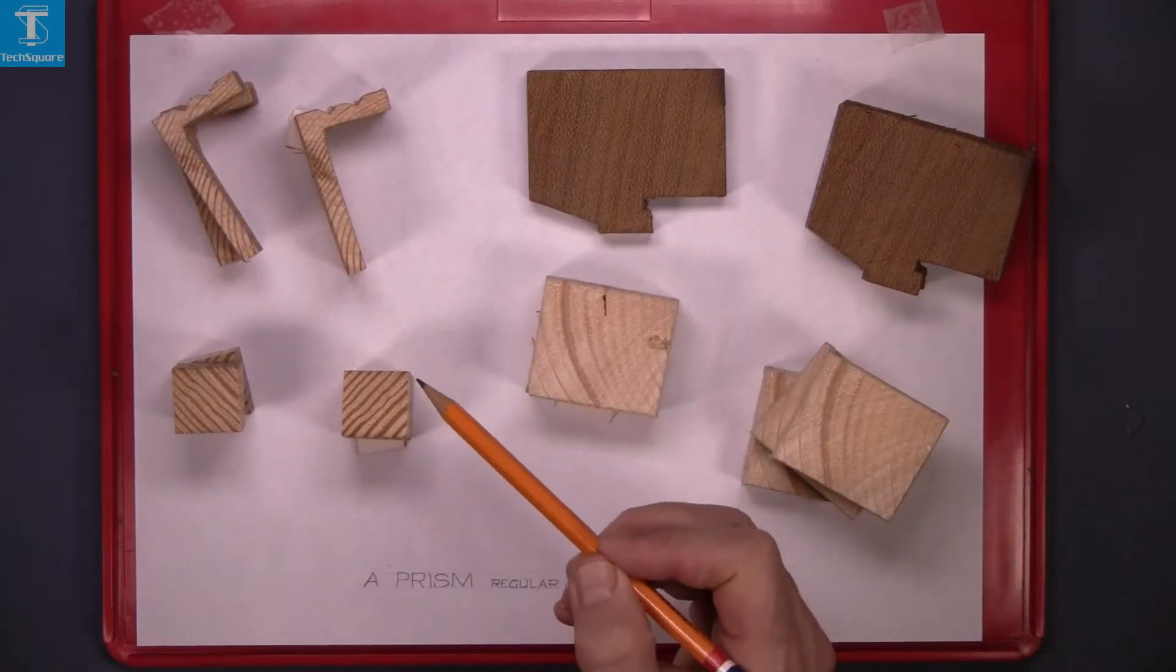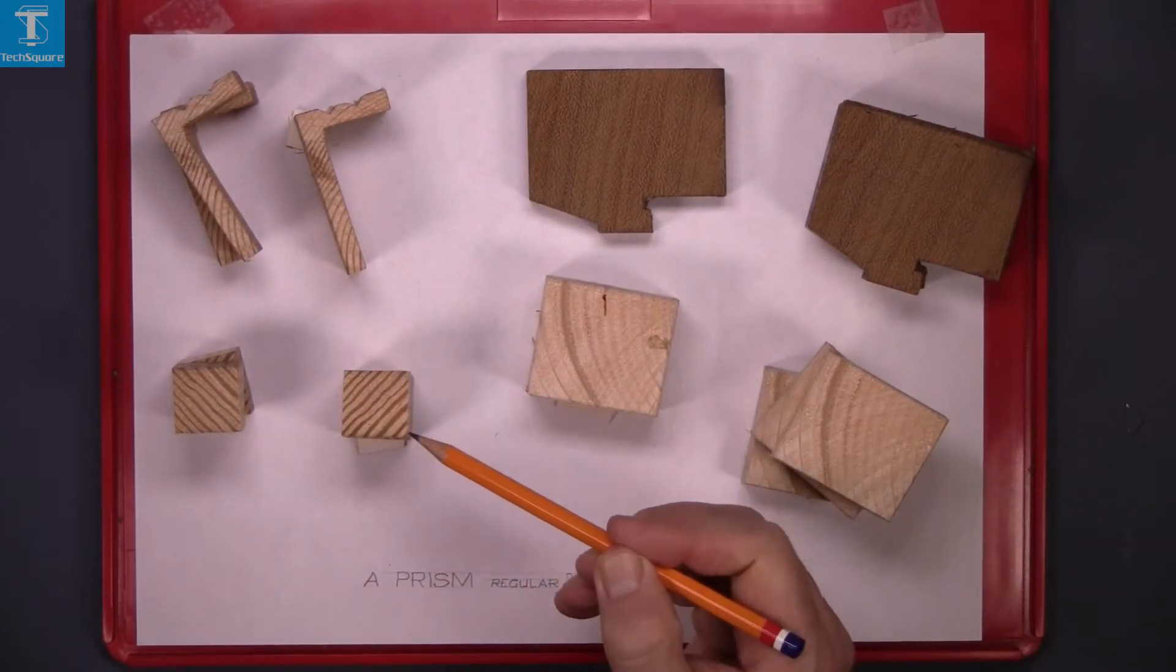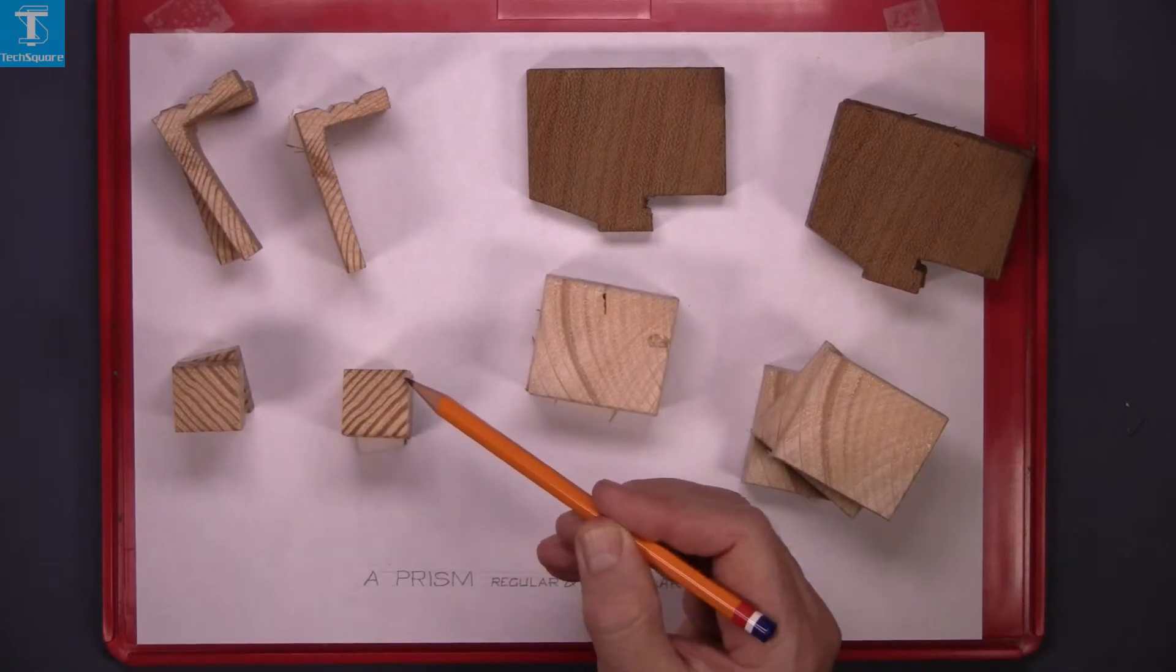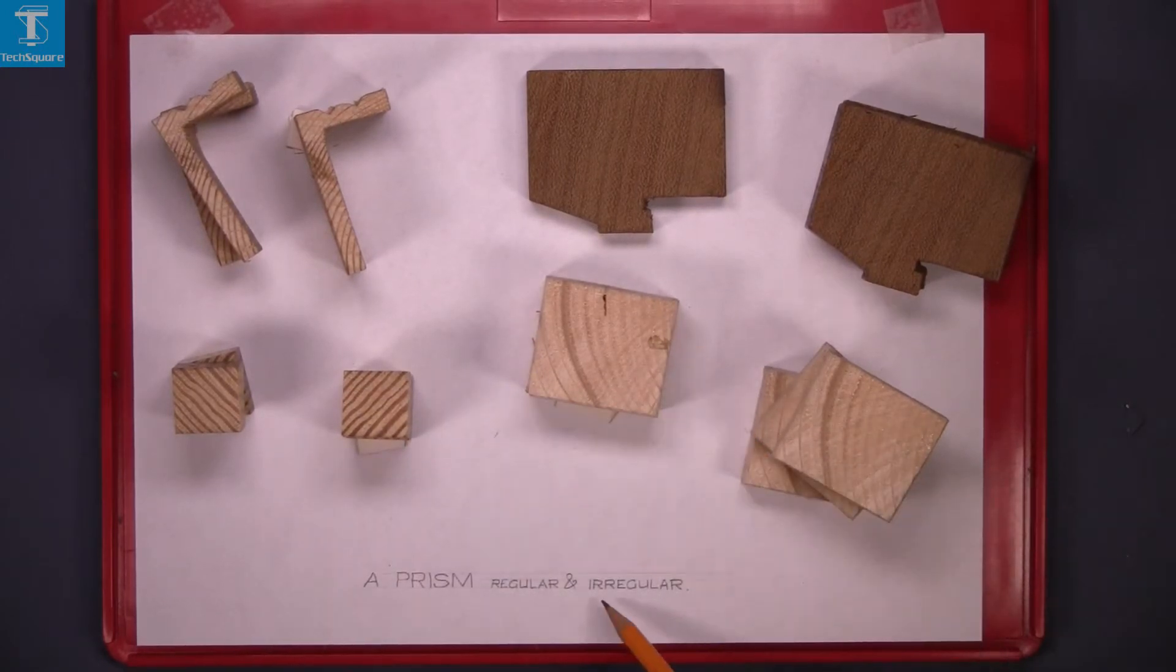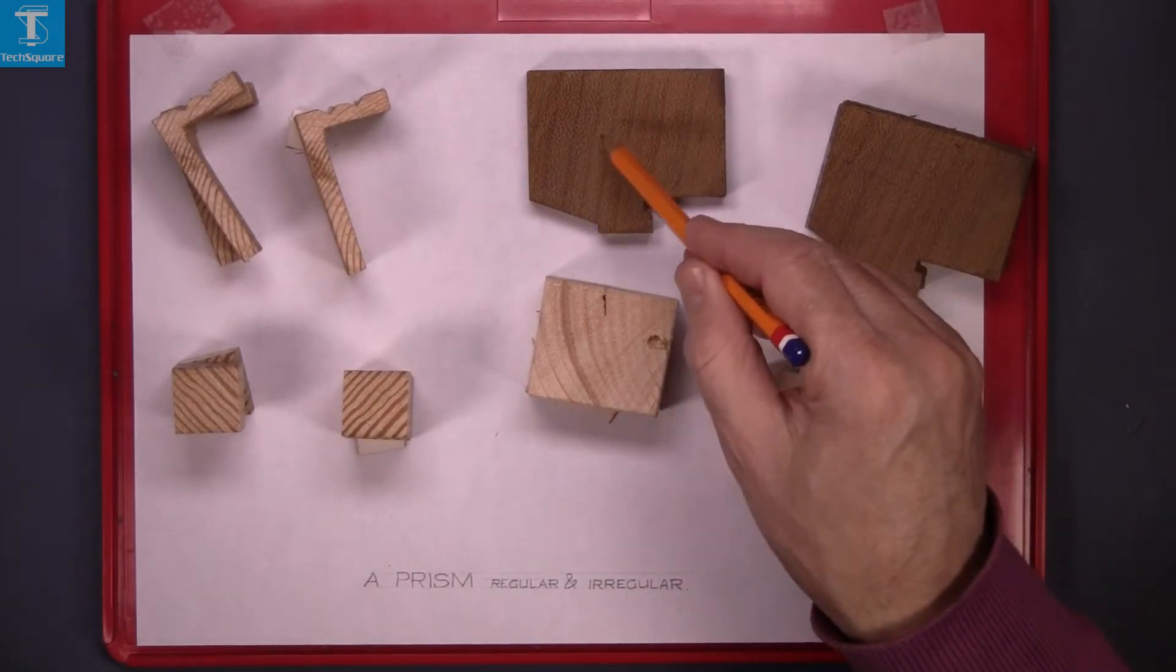But this one here is a regular prism. The sides are the same length and the angle is the same. This is irregular because the sides are not the same. And these are irregular.